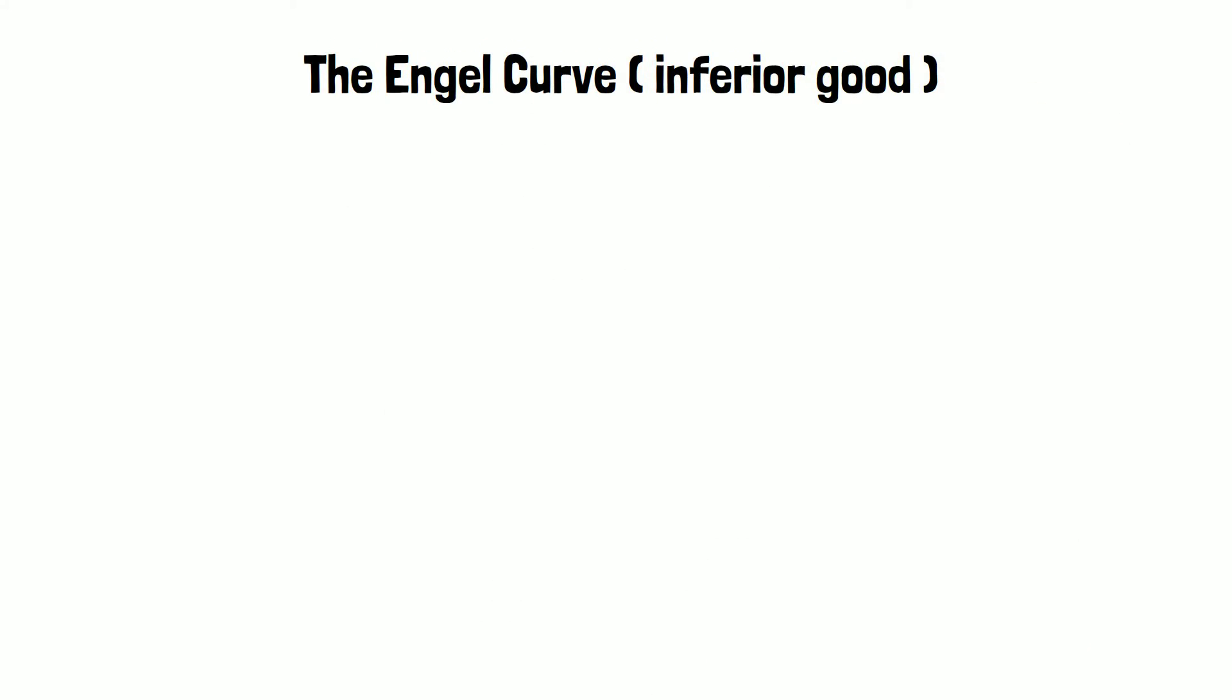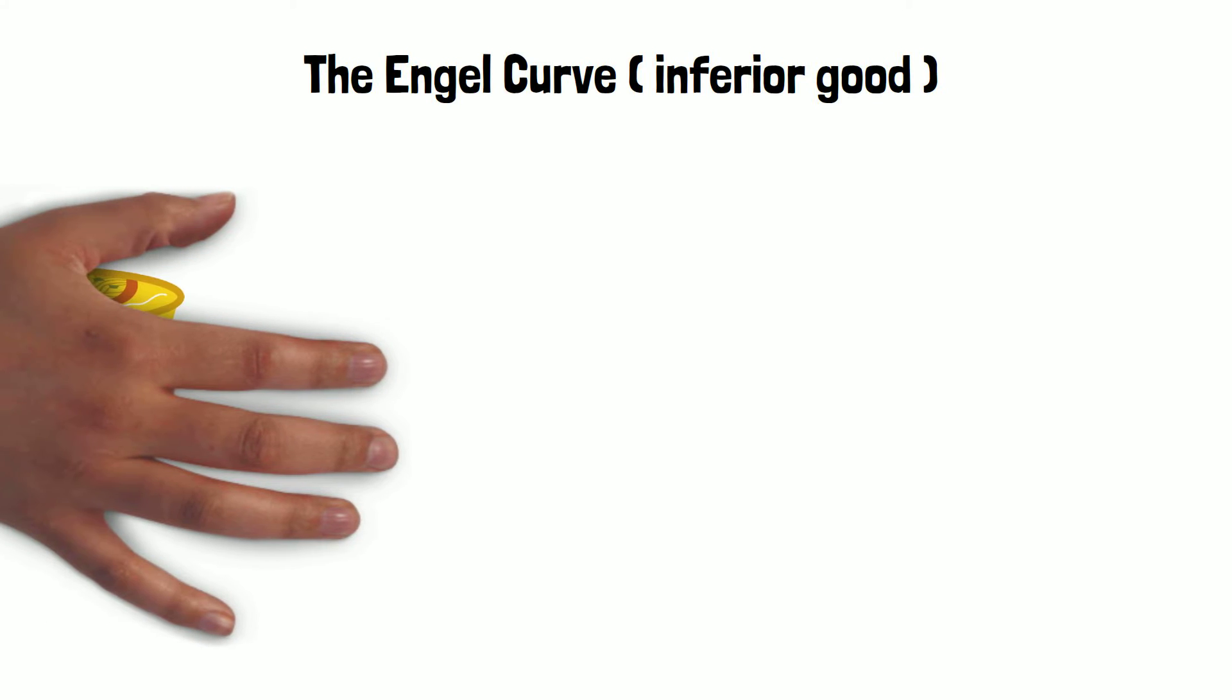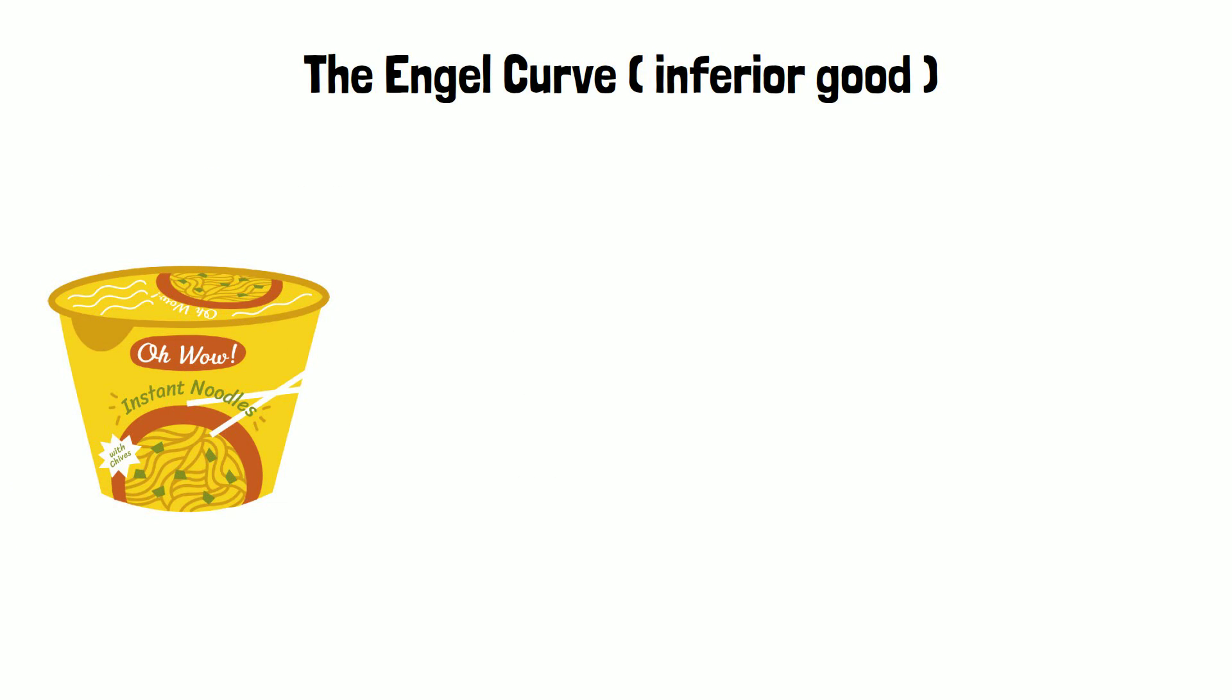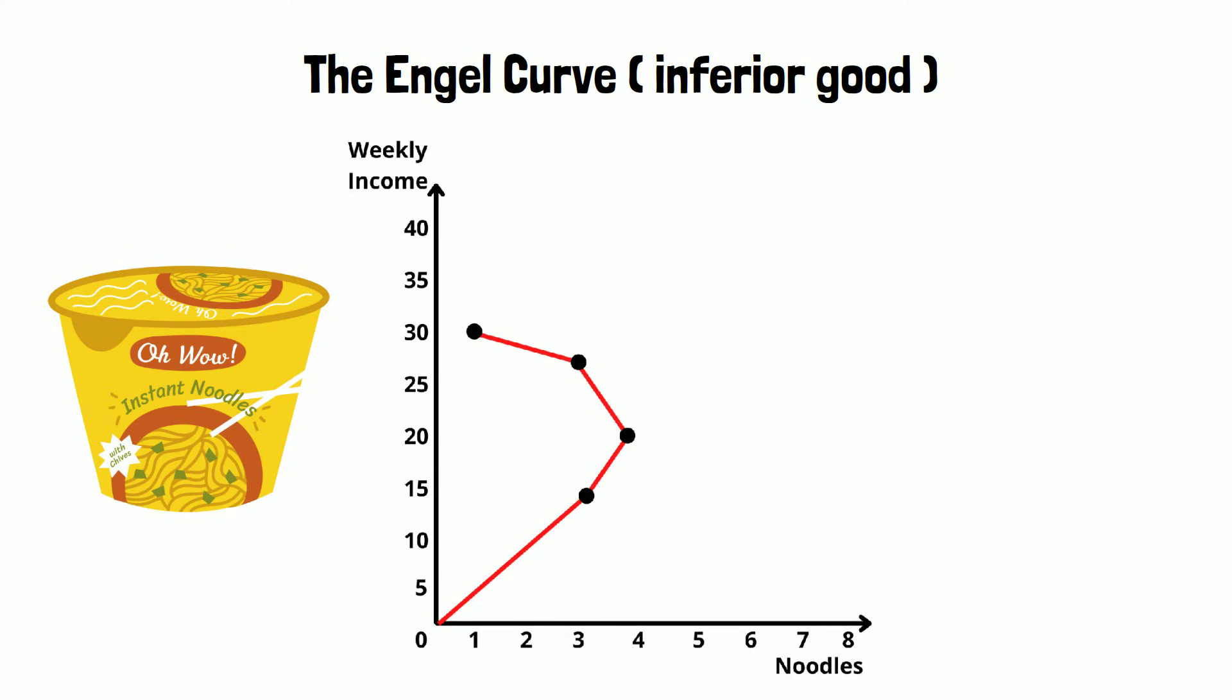The Engel curve shows how consumption of one good changes with income. Say you are a student without a lot of money so you like to eat pot noodles for dinner. You can see the Engel curve for your consumption of noodles on your screen.